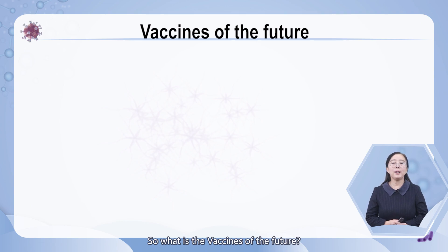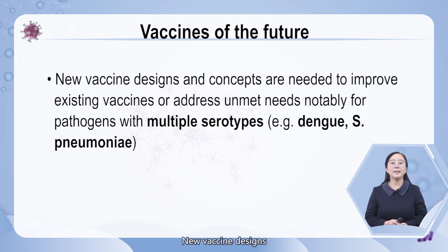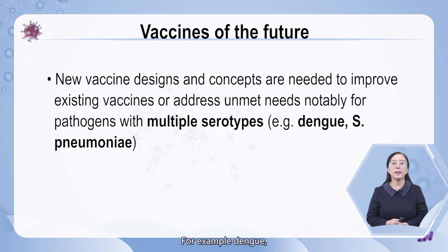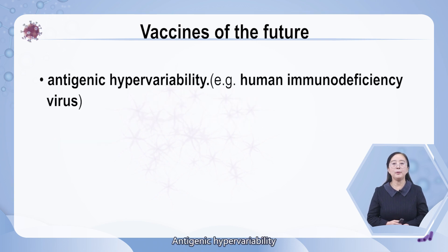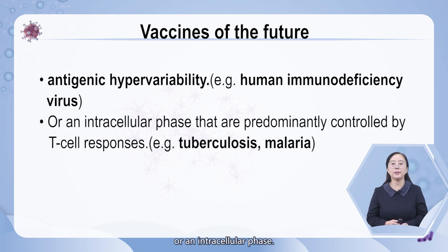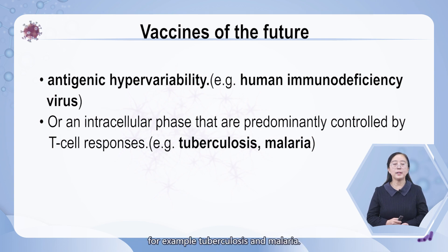What is the vaccine of the future? New vaccine designs and concepts are needed to improve existing vaccines or address unmet needs, notably for pathogens with multiple serotypes — for example, dengue and pneumonia — antigenic hypervariability, for example human immunodeficiency virus, or an intracellular phase that is predominantly controlled by T-cell response, for example tuberculosis and malaria.